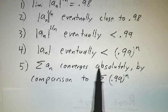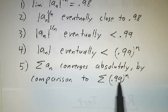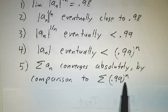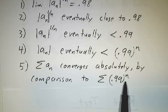This series converges absolutely by the limit comparison test to the sum of 0.99 to the n. 0.99 to the n converges, so an converges absolutely.